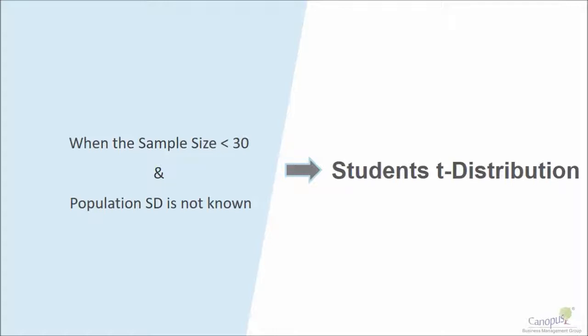Students t-distribution is relevant when we are dealing with small sample size, such as less than 30 samples, and the population standard deviation is unknown to us. So for all practical reasons, this fits very well into our real-life scenario.